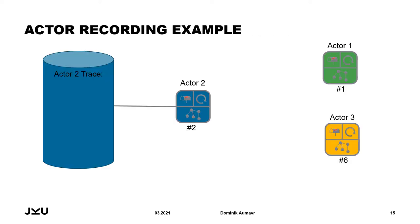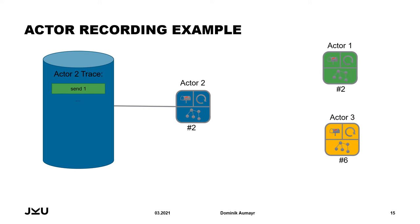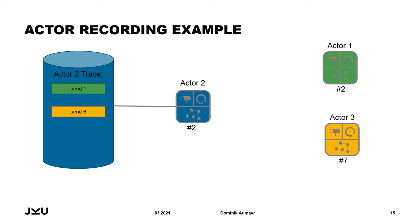Here we have a concrete example of recording an actor system with three actors. Some actors have already received previous messages and we are now going to look at the trace that actor 2 will produce. Actor 2 first sends a message to actor 1 — actor 1 had no previous messages, so this is the first one, and a send event with number 1 is recorded and the version number of actor 1 is incremented. Next, actor 2 sends another message to actor 3; this is the sixth message overall, so a send event with number 6 is recorded and the version number is incremented.